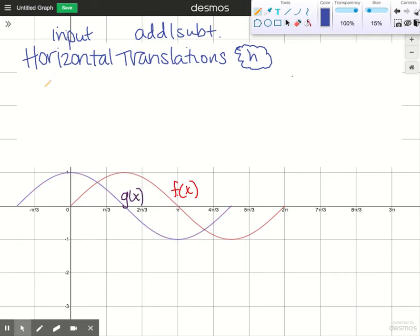So the coordinates are pi comma zero on the original function and pi over two comma zero on the new function. So that means that f of pi is equal to g of pi over two, because they both are equal to zero.